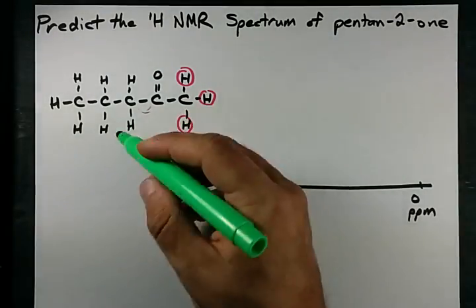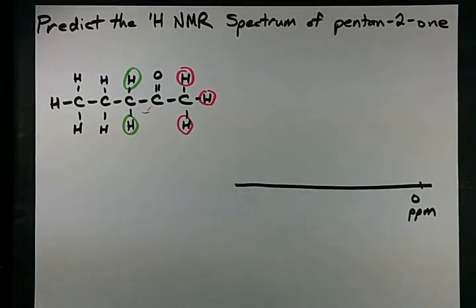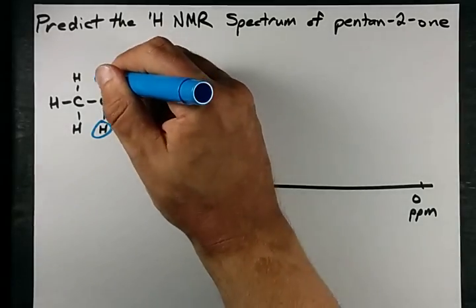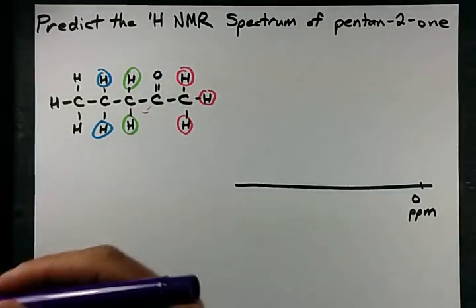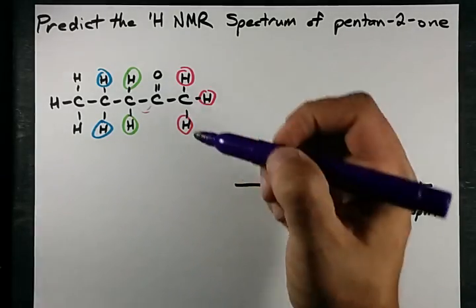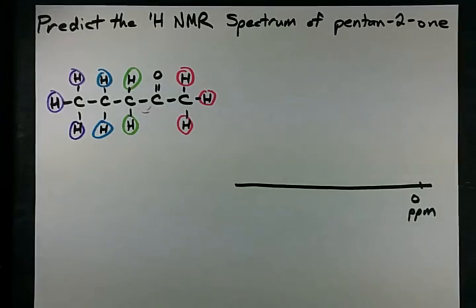Next as we move down the chain we have a CH2 group. They're equivalent to each other. Farther down the chain still these two hydrogens are equivalent to each other and at the very end of the chain farthest away from the C double bonded O these guys are equivalent to each other.